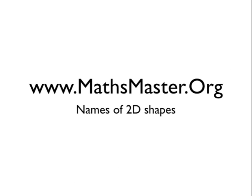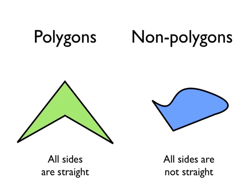Welcome to MathsMaster.org. Let's learn the names of 2D shapes. So what do I mean by 2D shapes? Well, 2D just means two dimensions. And what that means is that the shapes are flat.